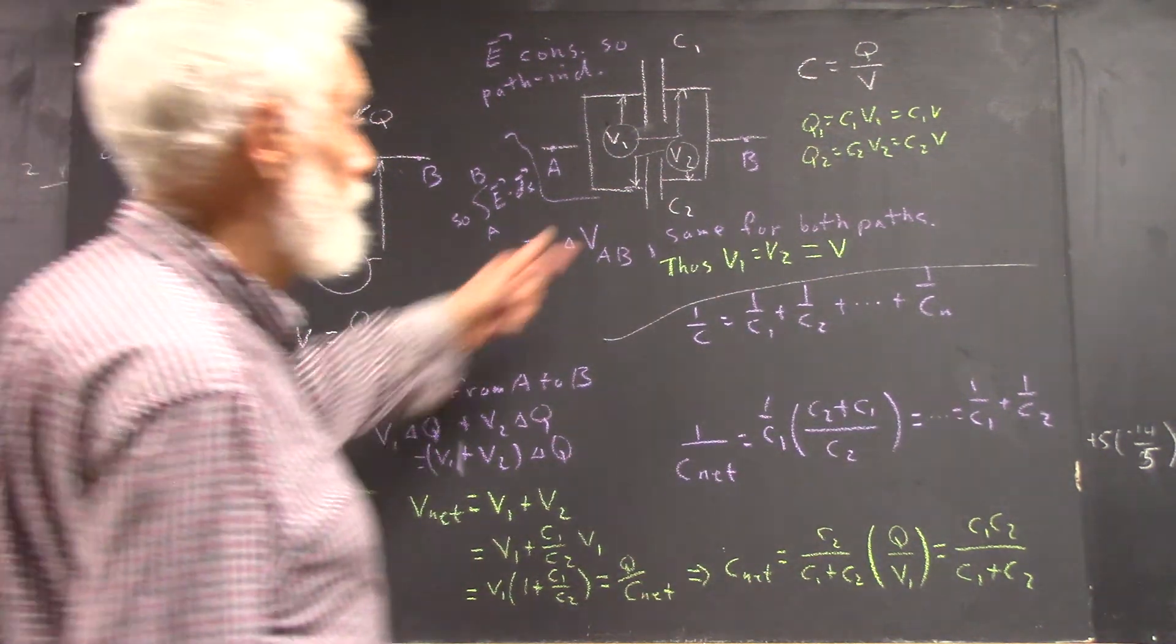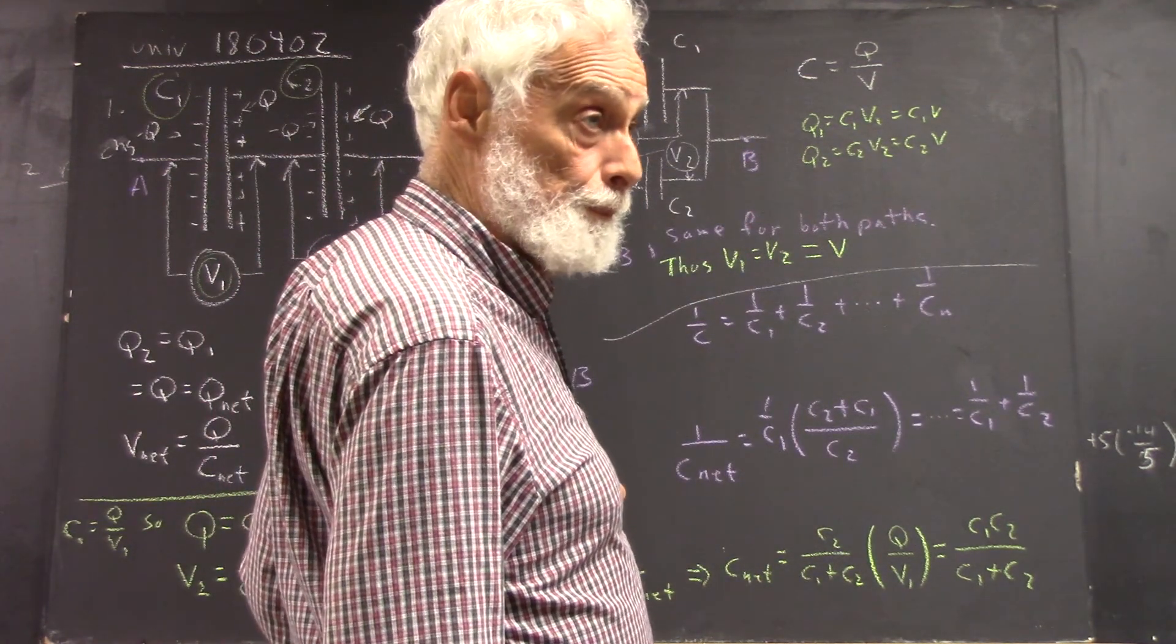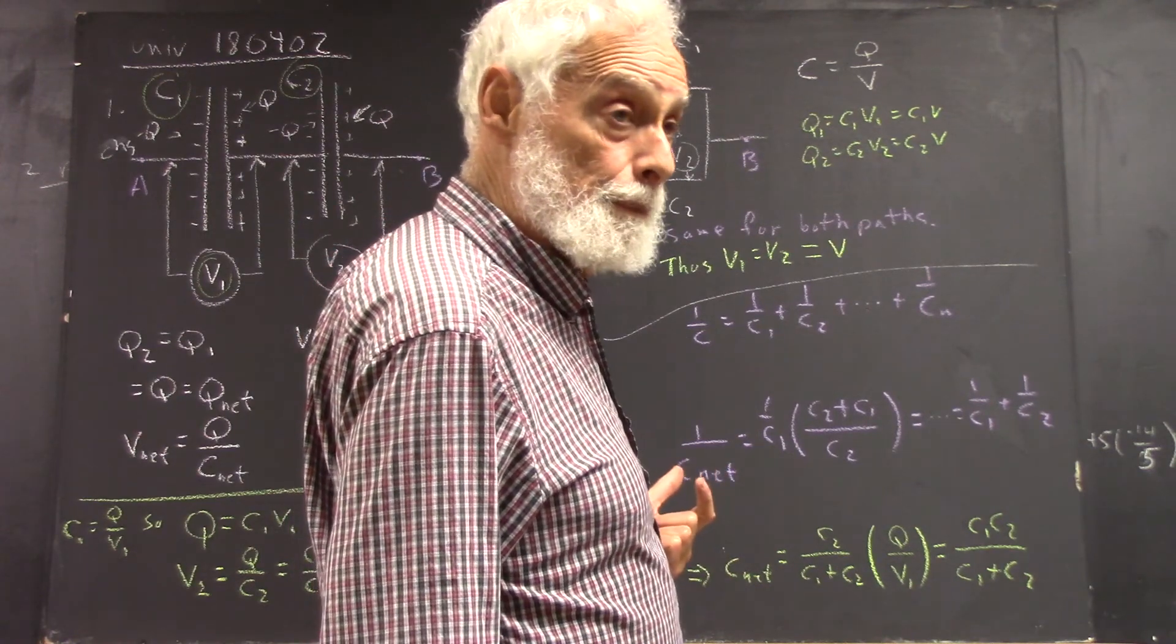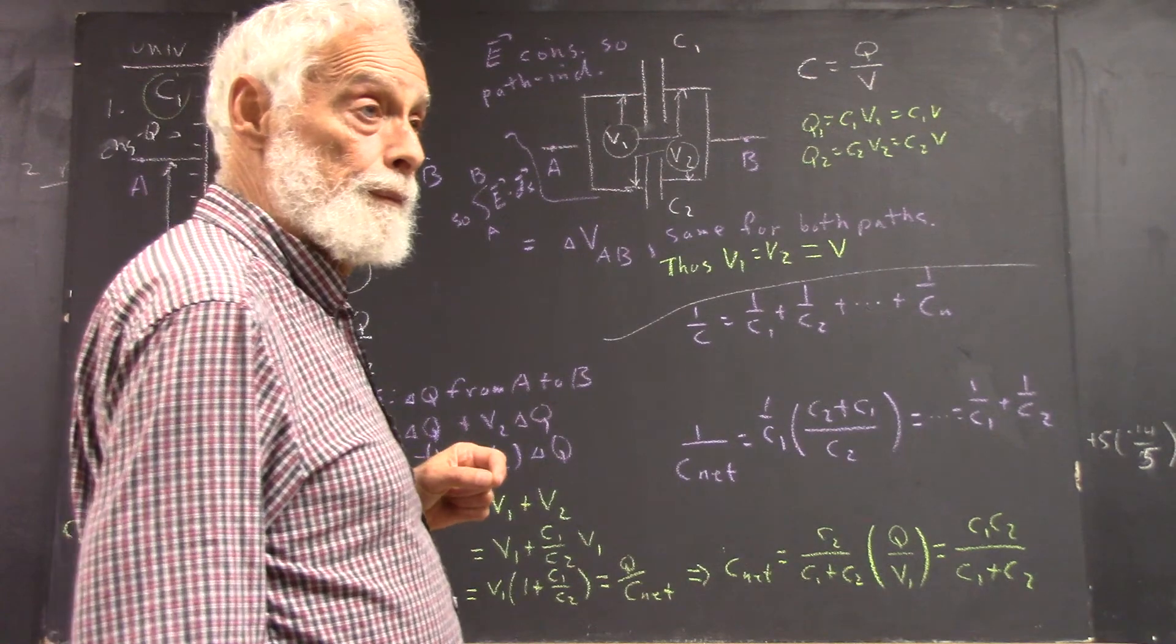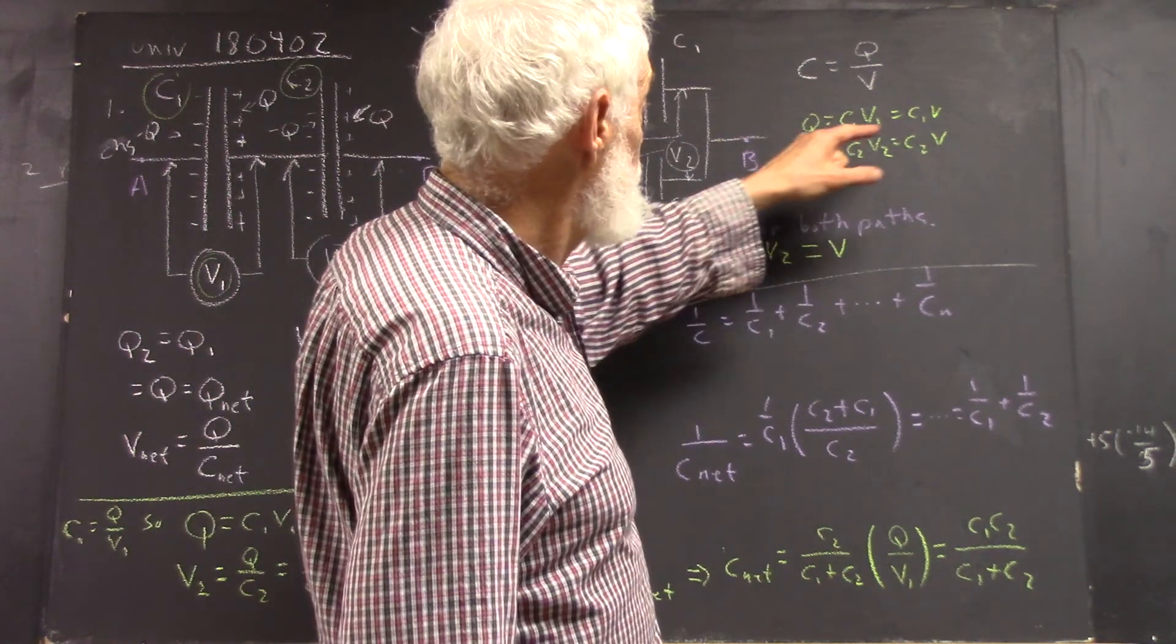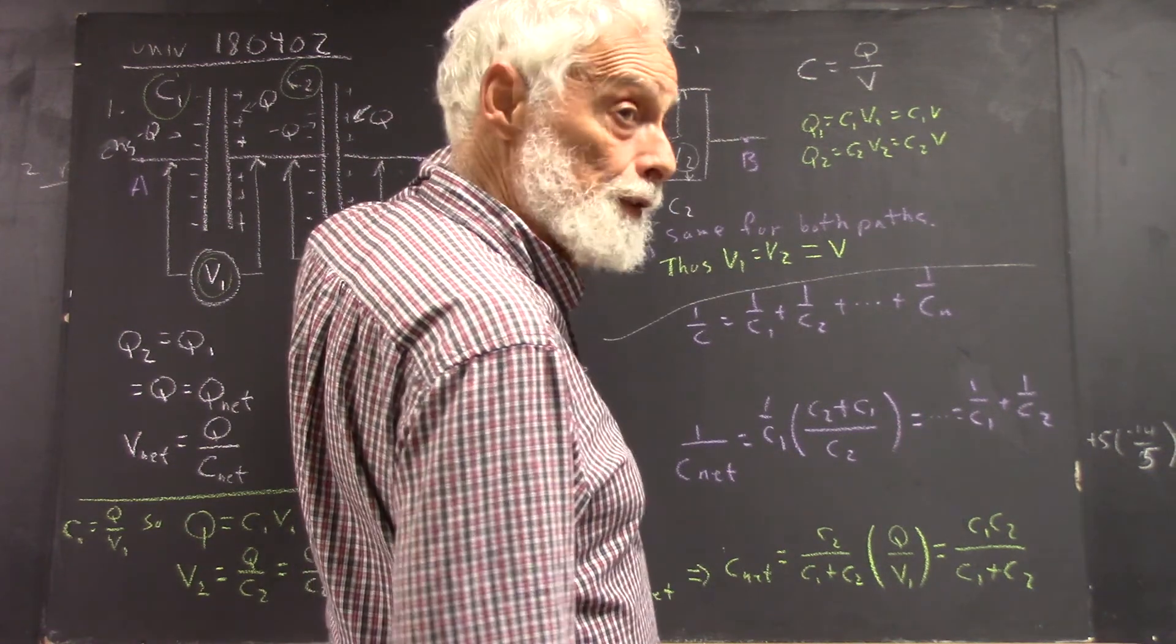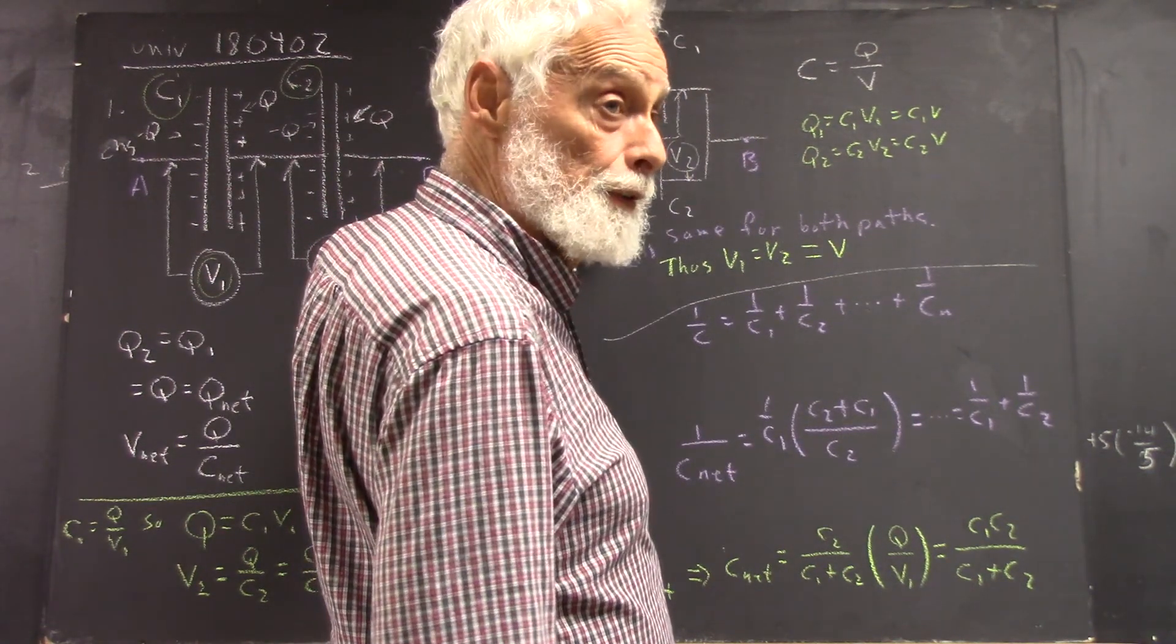Well, let's say you just hook something up and start separating charge, right? Okay, how much charge ends up being separated to get to voltage V? Well, you've got to pull this much charge off the first capacitor and deposit it over here, let's say. And you've got to do the same off of this capacitor, right?